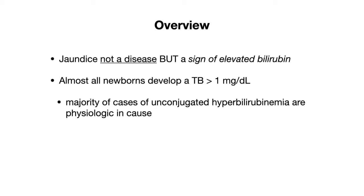When we talk about jaundice, it's important to know that jaundice is not a disease but a sign of elevated bilirubin, and it's important to understand where this elevated bilirubin is coming from. Almost all newborns will develop a total bilirubin of greater than 1, which is the upper limit of normal in adults.